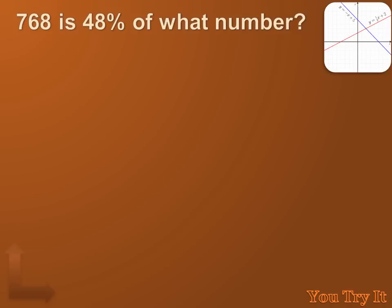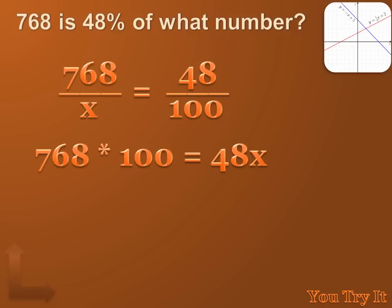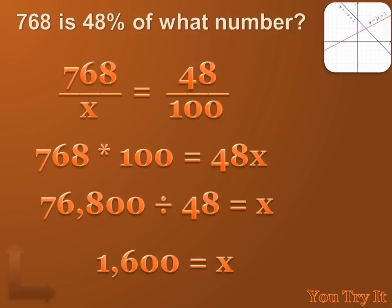Well, let's set up a proportion in order to solve this problem. 768 is 48% of what number? Well, we could say that 768 is to what number as 48% is to 100%. Now I can cross multiply and I'll get 768 times 100 equals 48 times X or 76,800 divided by 48 equals X or 1,600 equals X. 768 is 48% of 1,600.